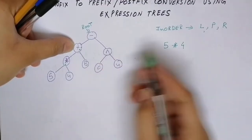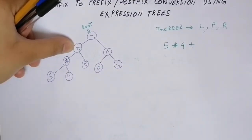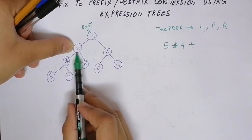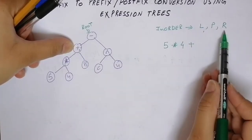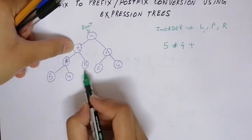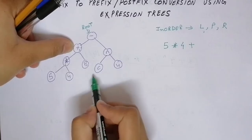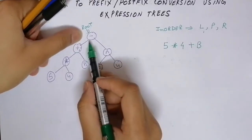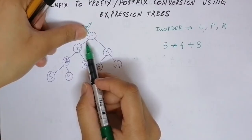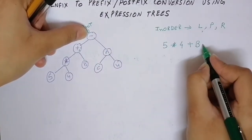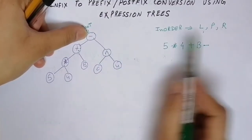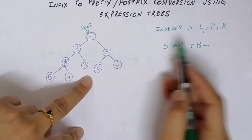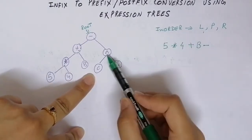We move towards the right and then back to the parent. Once the left subtree has returned, we print the plus node, and then go towards the right of the tree. Left and right of B are both null, so we print B directly and move back to the calling function which is minus.